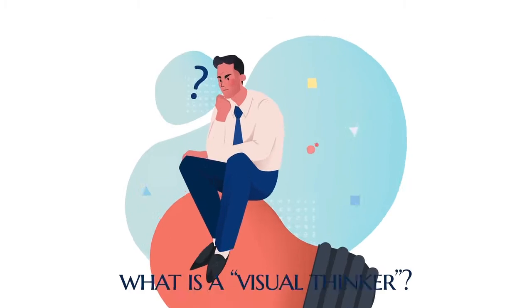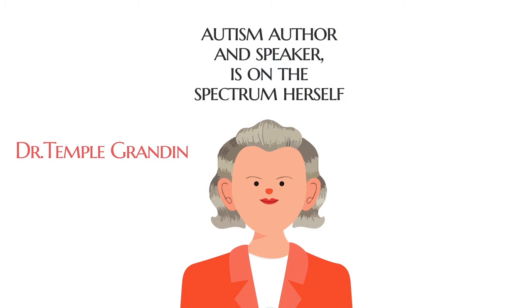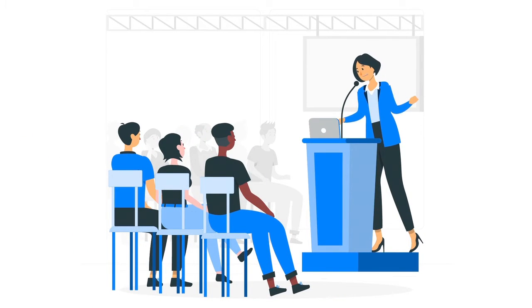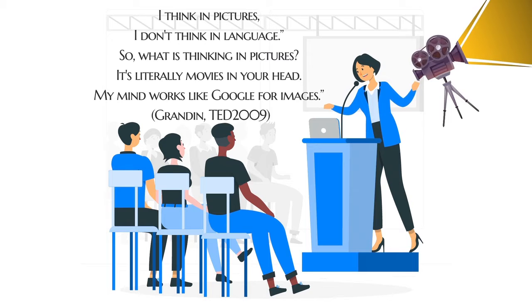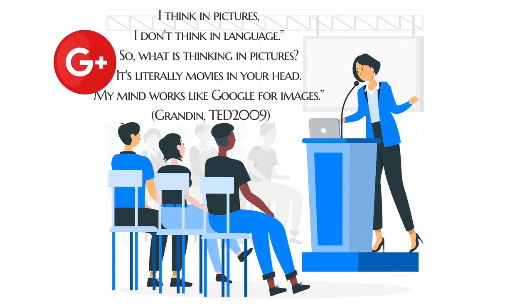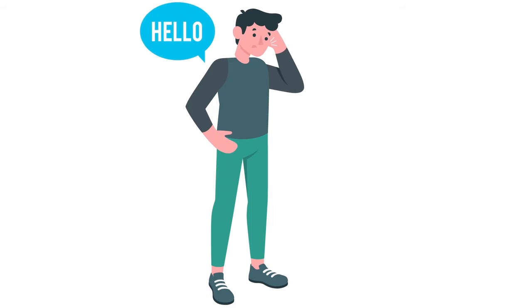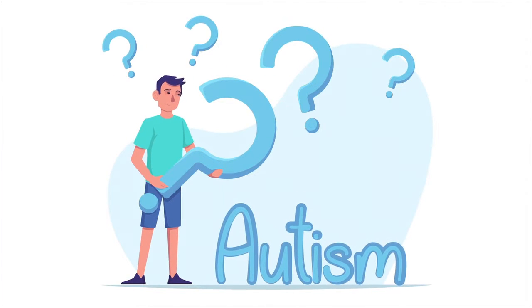So, what is a visual thinker? Dr. Temple Grandin, prominent autism author and speaker, is on the spectrum herself. She explains it well from a personal perspective: "I think in pictures. I don't think in language." What is thinking in pictures? It's literally movies in your head. My mind works like Google images. This can make verbal communication a challenge for visual thinkers who live in a language-dominated world.